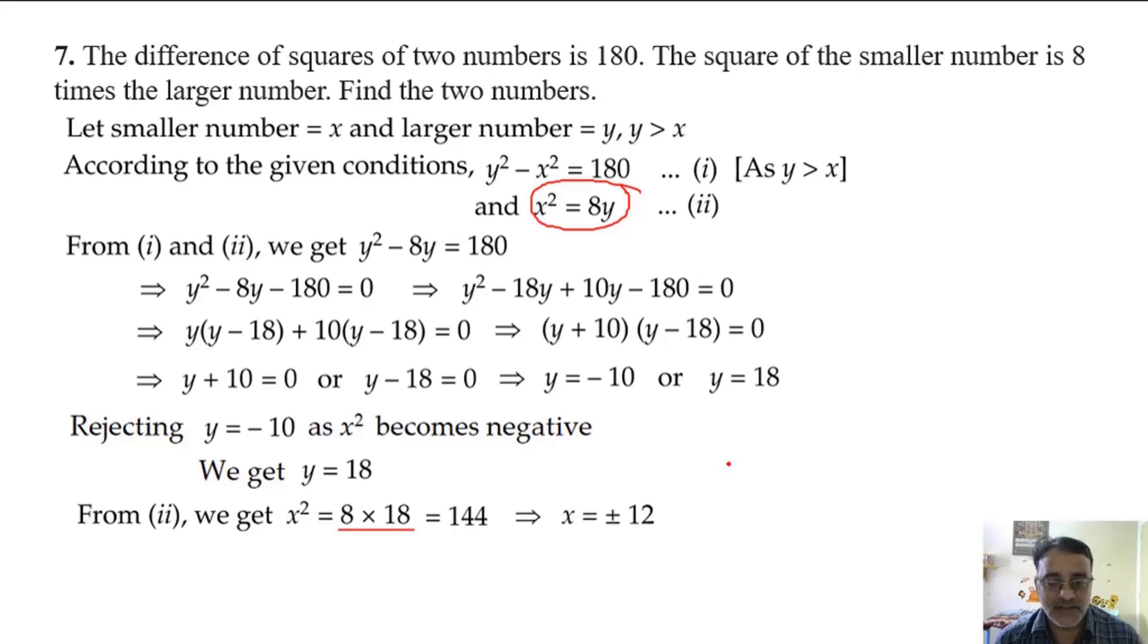The question does not say that it has to be a positive integer, positive number, or natural number. But y as minus 10 will not work because substituting it makes x square negative, which is wrong. Because square of any real number is always positive. So we are getting two values: 18, 12 or 18, minus 12.